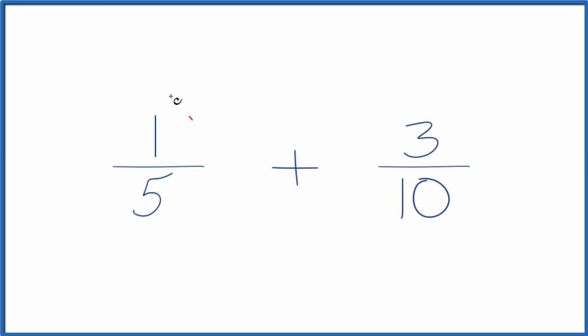In this video, we'll add the fractions one-fifth plus three-tenths, and here's how we do that. When we're adding fractions, we want to get the denominators to be the same. We have the same denominator, we can just add the numerators together, and that'll give us the sum for one-fifth plus three-tenths.